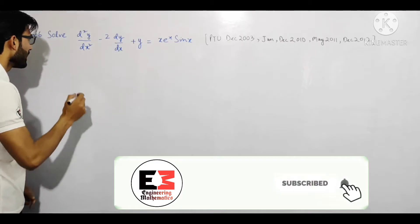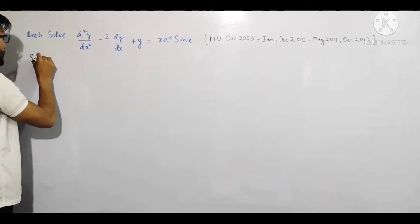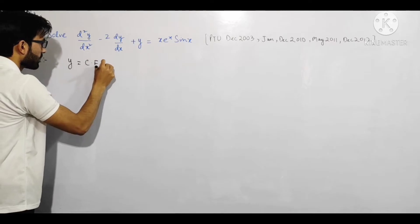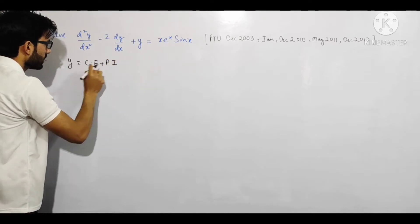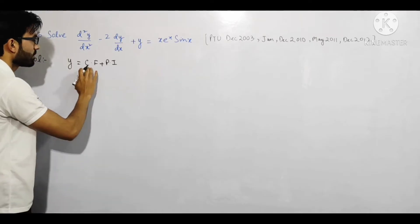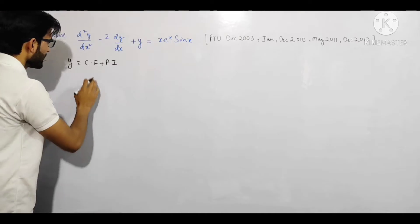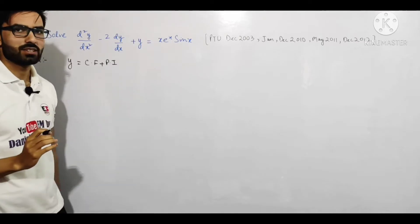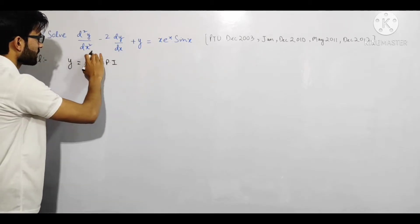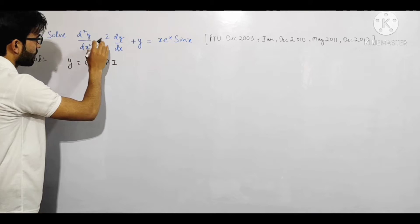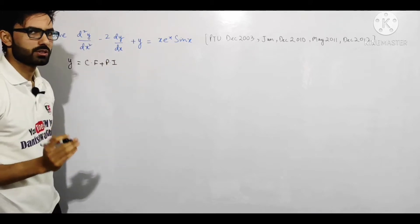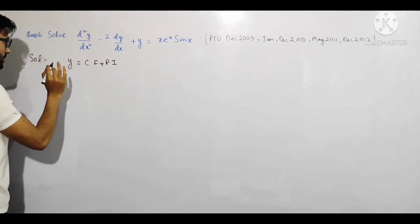Solve ka matlab hai complete solution find karna. Aapko pata hai kisi bhi higher order differential equation ka complete solution hota hai y = CF + PI. Agar mujhe CF aur PI mil jaye toh mein complete solution find kar sakta hun. CF find karne ke liye auxiliary equation chahiye hogi, jo milti hai jab hum differential equation ko f(D) mein change karke f(D) = 0 put karte hain.